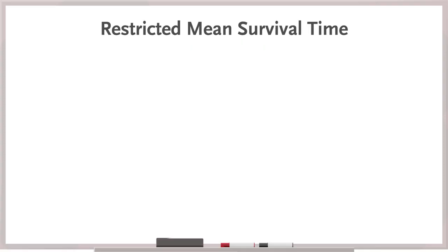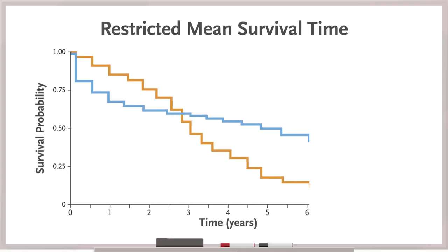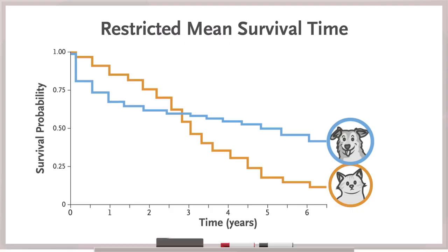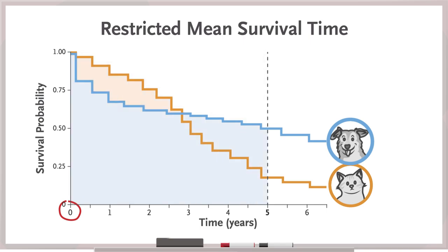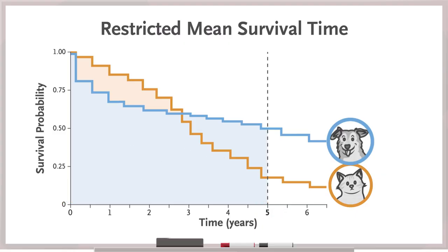When the proportional hazards assumption doesn't hold, you need an approach other than a Cox proportional hazards model — which is where restricted mean survival time comes in. Restricted mean survival time summarizes survival from time zero to a fixed, pre-specified period of follow-up. It can be estimated by calculating the area under the survival curve to that point of follow-up, say five years. The greater the area under the curve, the greater the restricted mean survival time. You can compare the two groups by calculating the difference between the areas under the curves.